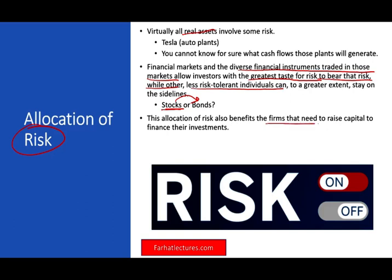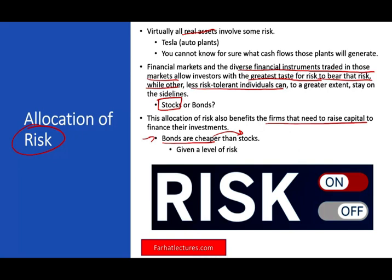This allocation of risk also benefits firms that need to raise capital. If Tesla wants to issue stocks, it's more expensive because investors require a higher return — stocks are riskier than bonds. With bonds, investors are guaranteed fixed income payments every six months or every year. When investors take higher risk with stocks, they want higher return. Therefore bonds are cheaper than stocks for Tesla or any company. If they don't want to pay a lot, they would issue bonds rather than stocks — just as investors may prefer bonds, Tesla might prefer to sell bonds to the public because it's cheaper.